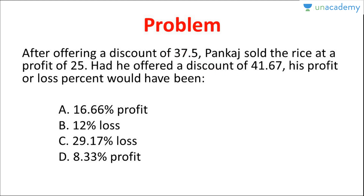You can see these are unusual discounts — 41.67% and 37.5%. It would be difficult to solve this using a variable like X. You need to remember the fraction-to-percentage conversions. For example, 37.5% converts to the fraction 3/8, and 41.67% converts to 5/12. You need to remember the table of fractions and their corresponding percentages.